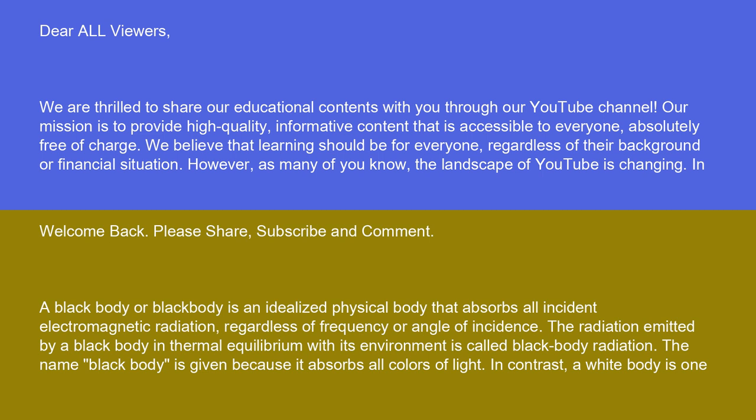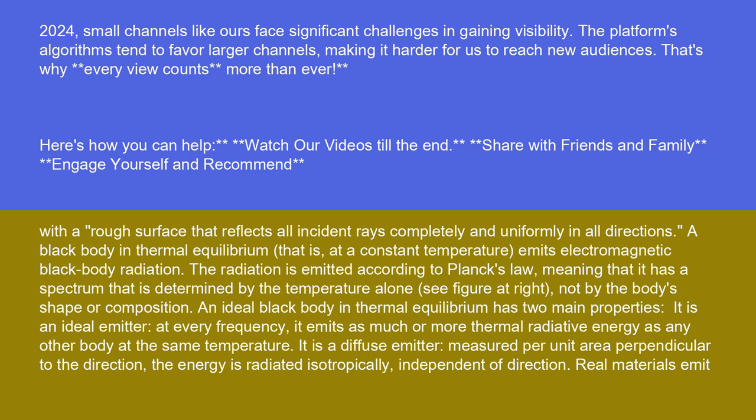In contrast, a white body is one with a rough surface that reflects all incident rays completely and uniformly in all directions. A black body in thermal equilibrium, that is, at a constant temperature, emits electromagnetic black body radiation. The radiation is emitted according to Planck's law, meaning that it has a spectrum that is determined by the temperature alone, not by the body's shape or composition.